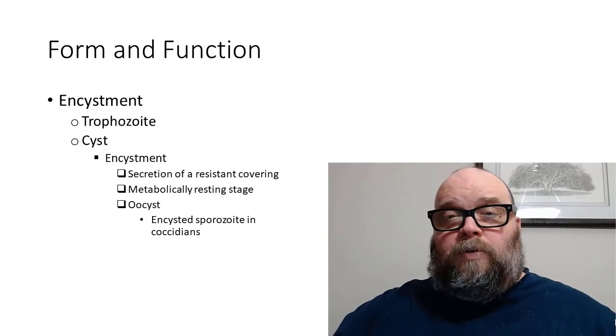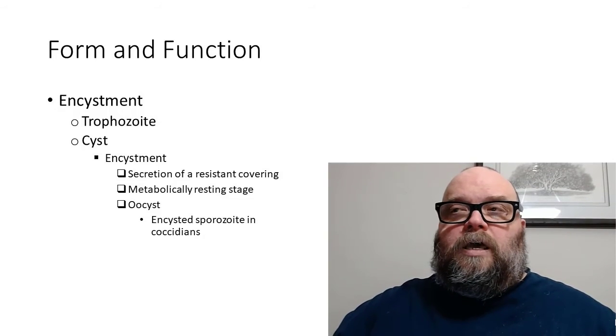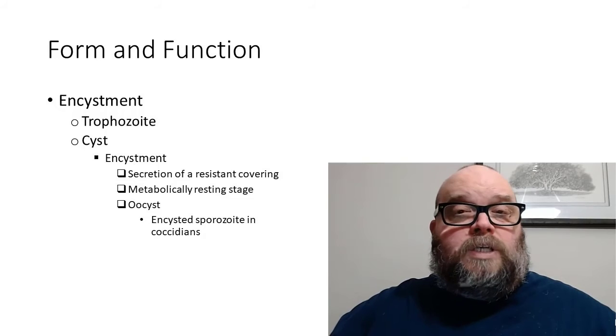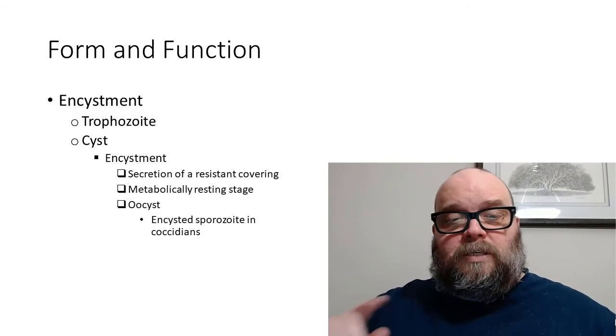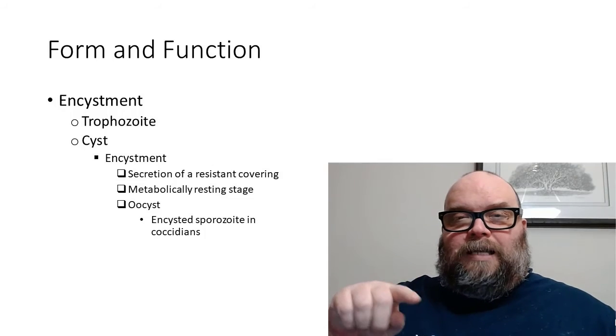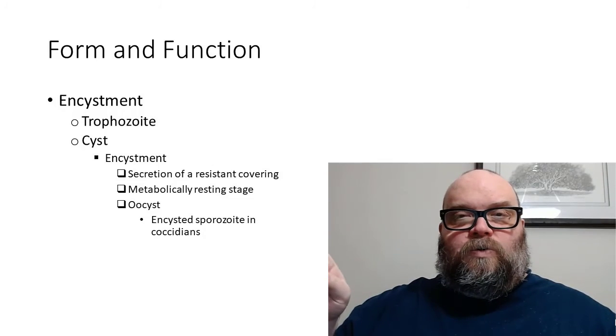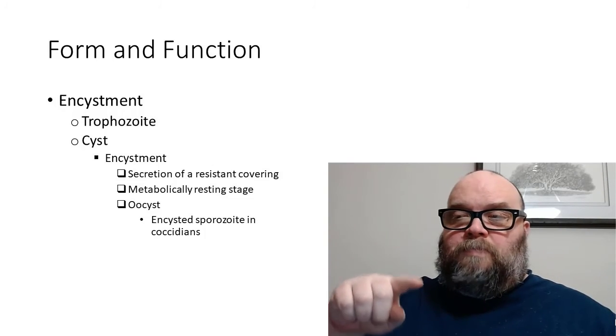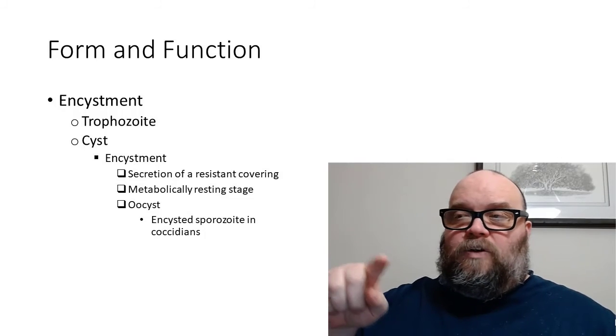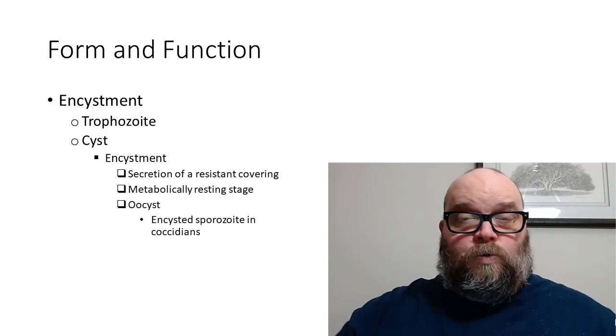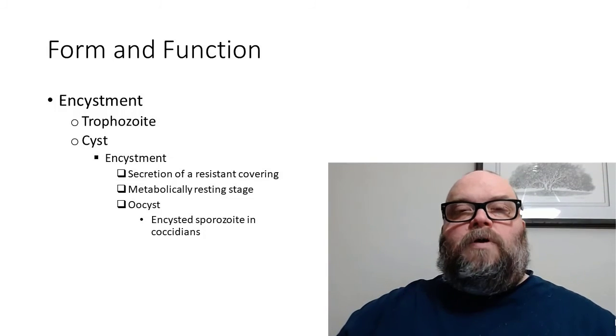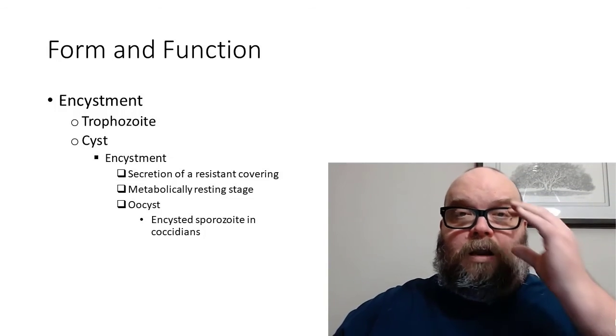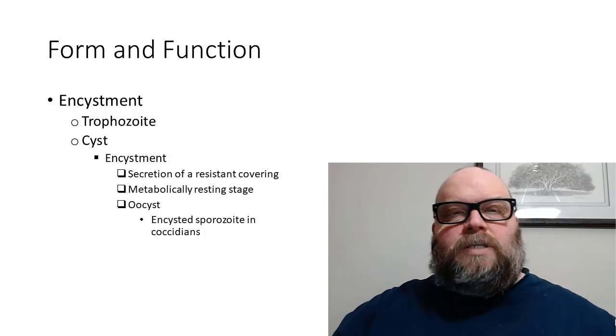For some of the protists, just during part of their life cycle, they form an oocyst, which is a form of a cyst. But this is not in response to environmental cues, but just part of the life cycle because that cell is going to be passed out of the host to be taken up by the next host, so that protective coating will protect that larval stage or developmental stage.